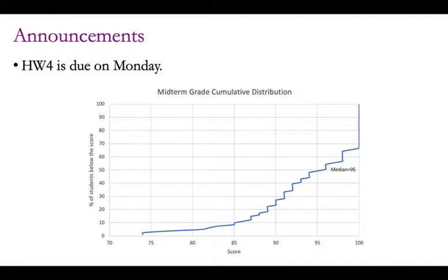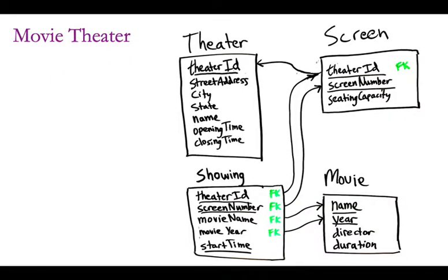I like these cumulative distribution plots — they're useful because you can see not just the shape of the distribution, but the derivative of it by the slope of the line. All right, the first thing I want to do is talk a bit more about schema design and particularly composite keys, because I think that has been confusing for some people. It's kind of related to the homework but not totally.